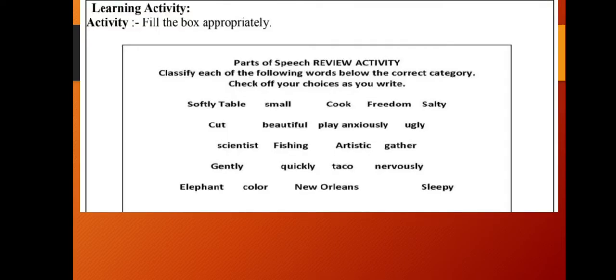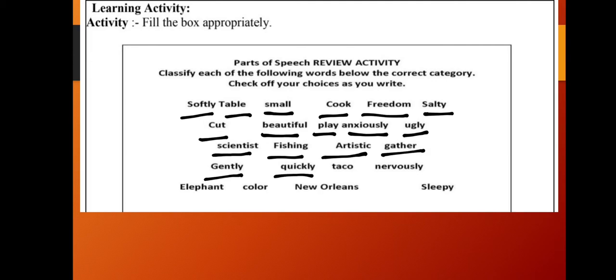Now based on this, you have an activity. You can see different words are given. We have to classify these words into columns - especially noun, adjective, adverb, and verb. We have to write them in just these four groups. Before that, let's read them softly: table, small, cook, freedom, salty, cut, beautiful, play, anxiously, ugly, scientist, fishing, artistic, gather, gently, quickly, taco, nervously, elephant, color, New Orleans, and sleepy.